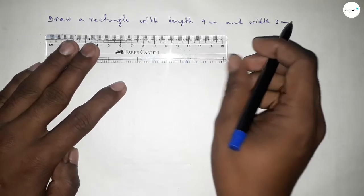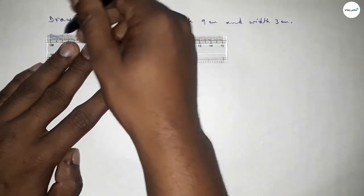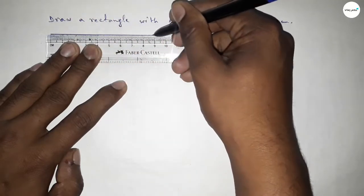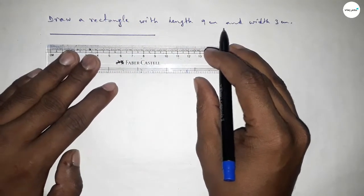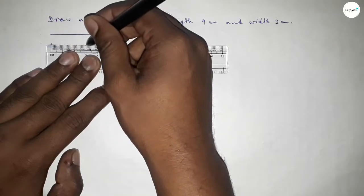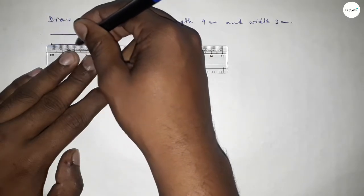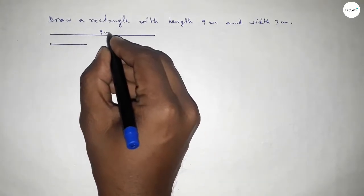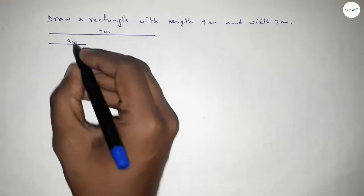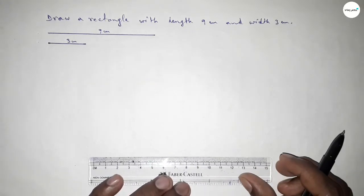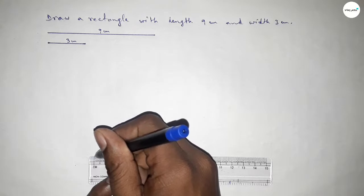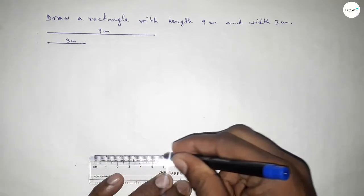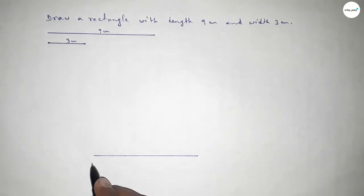First of all, we have to draw a line of length 9 centimeters. Starting from zero to 9 — so this is the 9 centimeter line. Then drawing a line of length 3 centimeters. So this one is 9 centimeters and this one is 3 centimeters. Now we count again: 1, 2, 3, 4, 5, 6, 7, 8, 9 — so this is the 9 centimeter line.